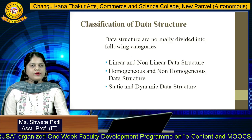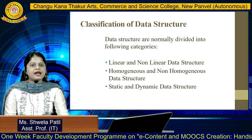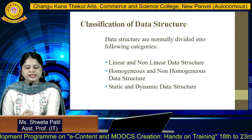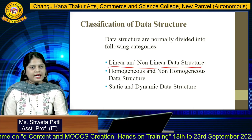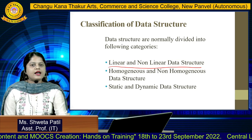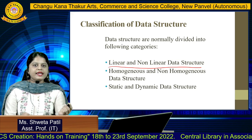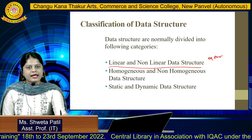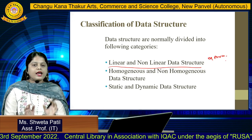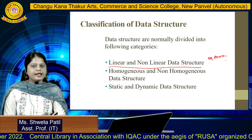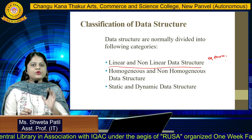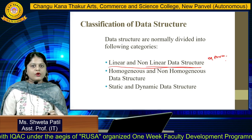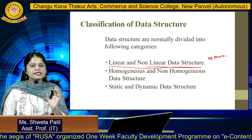The classification of data structure is categorized into three types. The first is the linear and the non-linear type. When elements are formed in a sequence, it is known as linear — for example, array. When elements do not form any sequence, this is known as the non-linear kind of data structure.